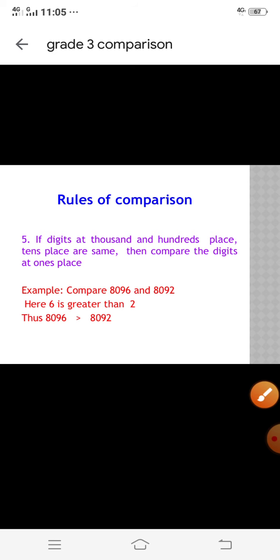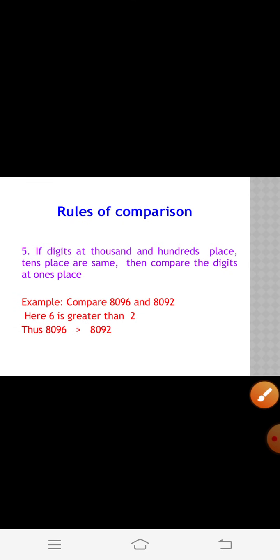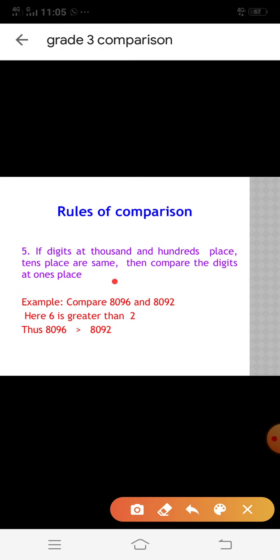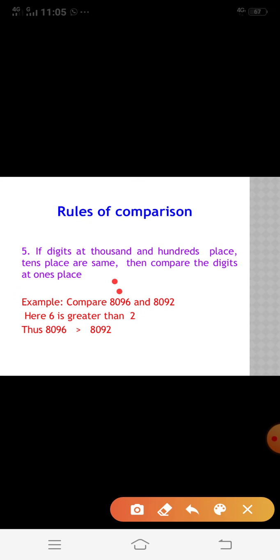If the digits at the thousands place, hundreds place, and tens place are the same, then we have to compare the digits at the ones place. In the given numbers, the thousands place, hundreds place, and tens place are all the same, so we have to check the ones place. Here, 6 is greater than 2, so 8096 is greater than 8092.